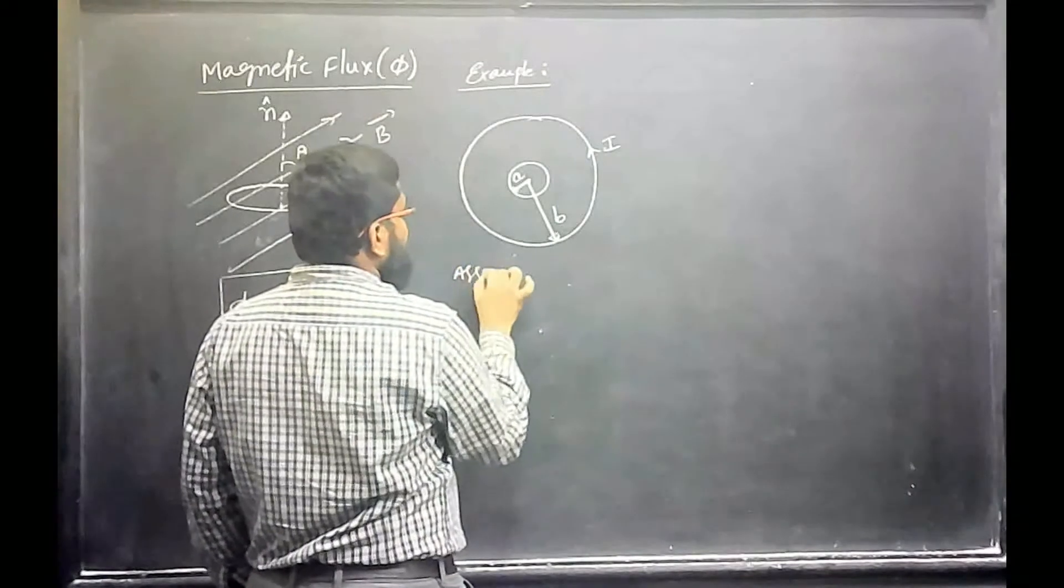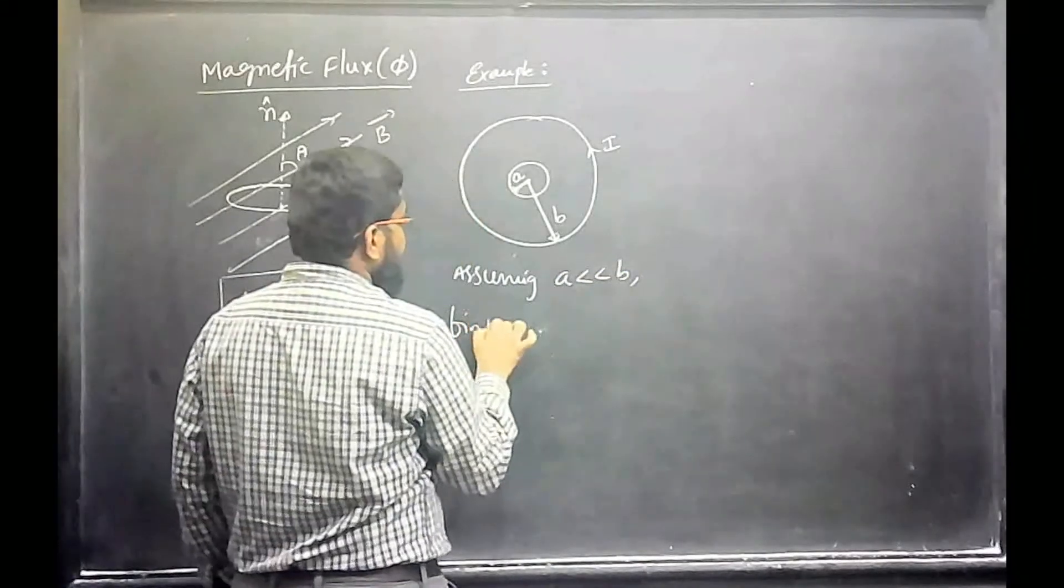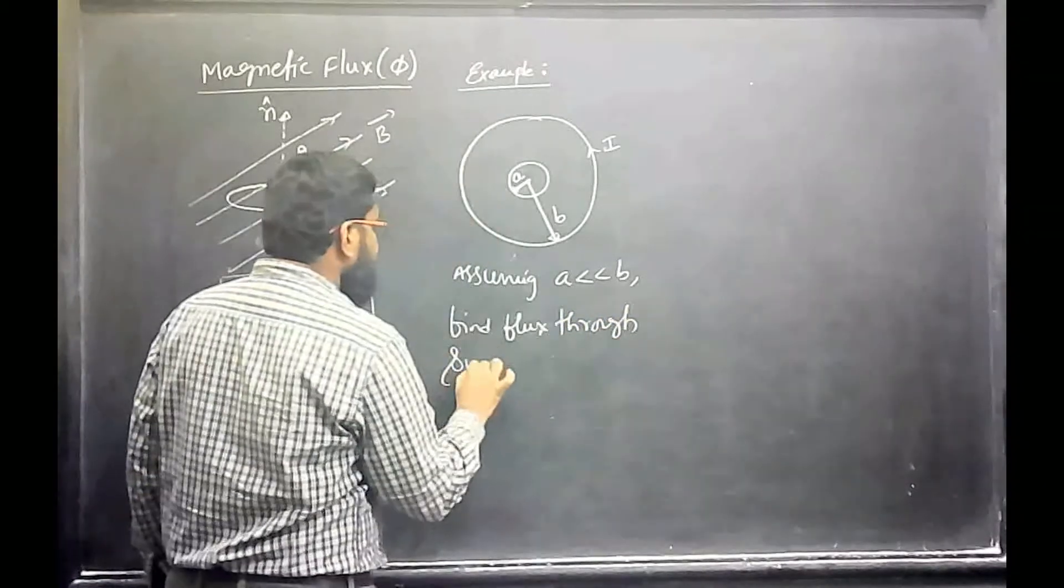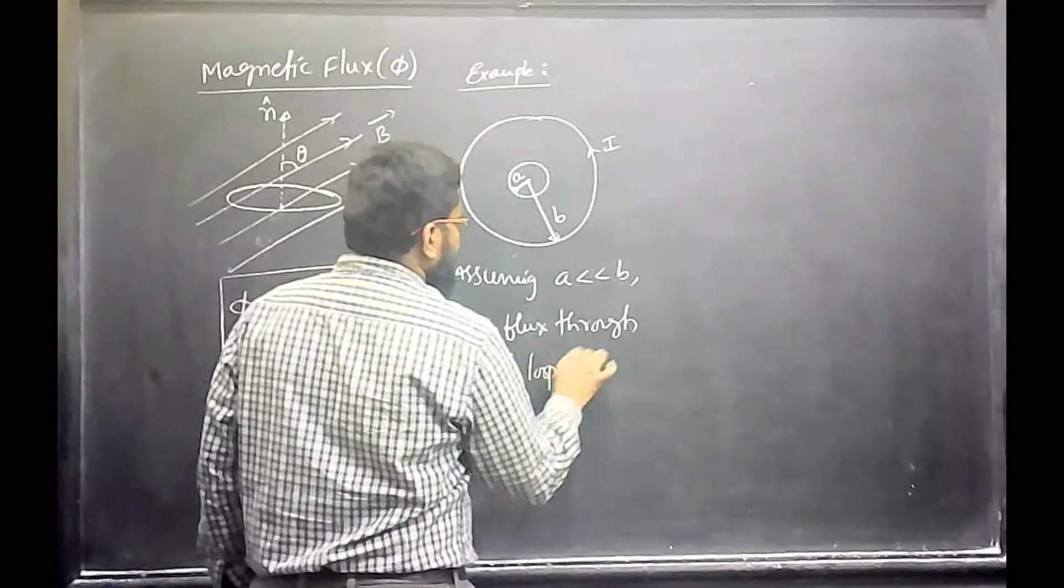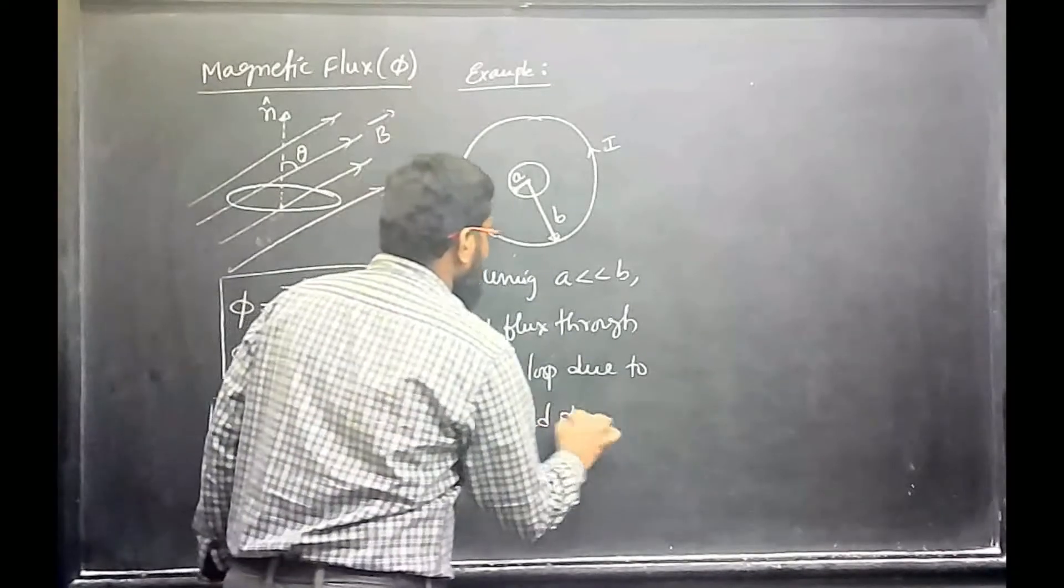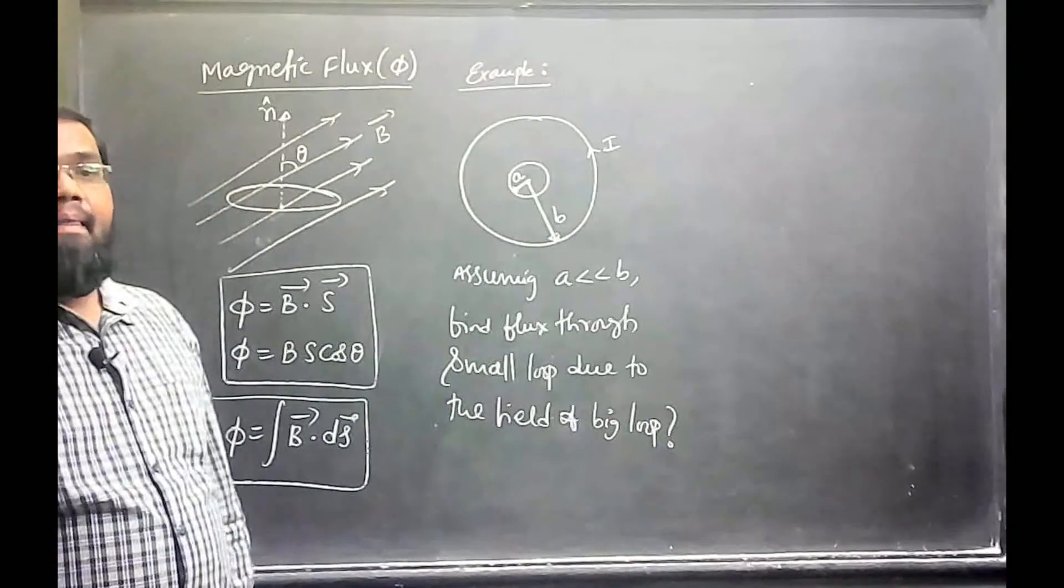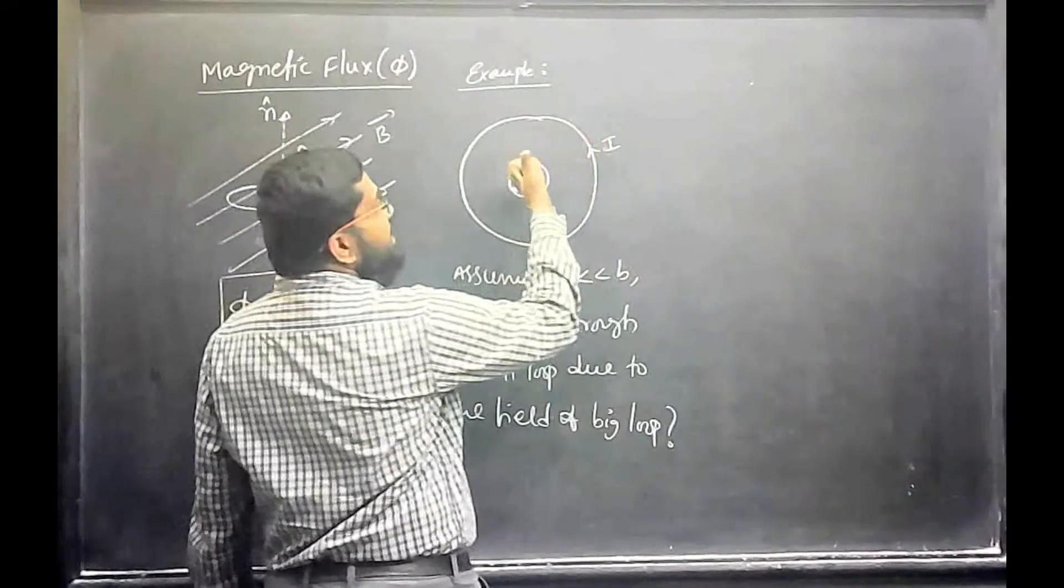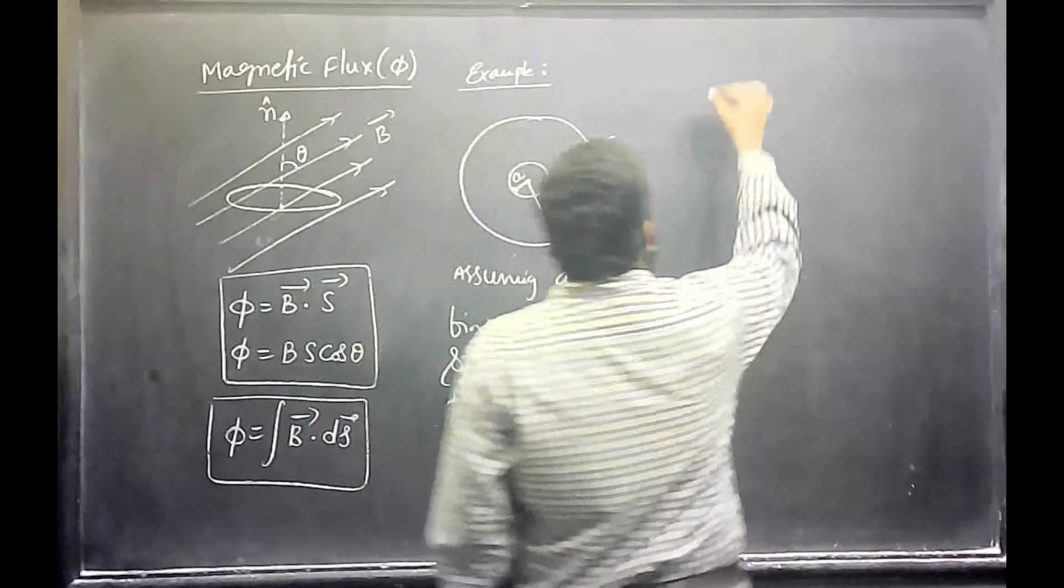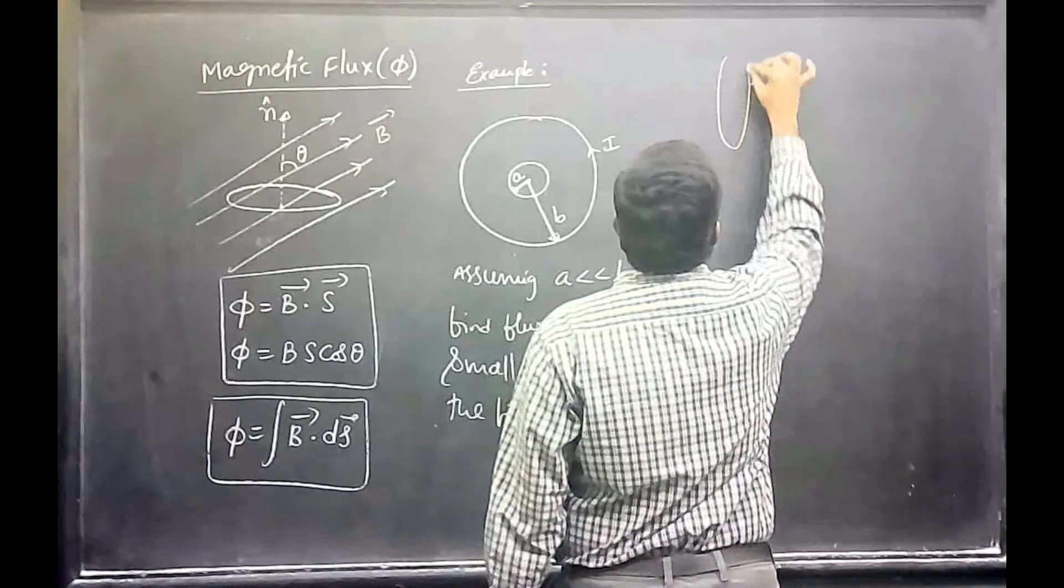So, assuming a less than B, find flux through small loop due to the field of big loop. And then you put current in big loop, it will produce the ring again. Ring will produce the magnetic field. So, this is the big loop of radius B.